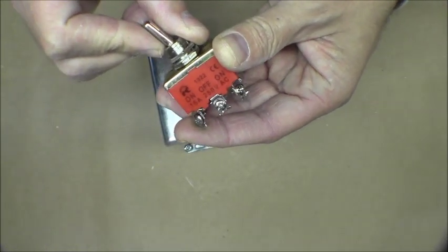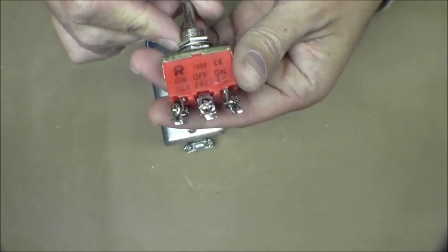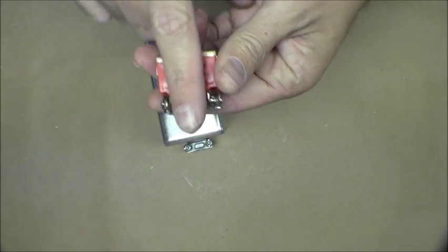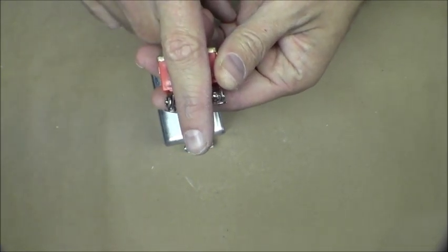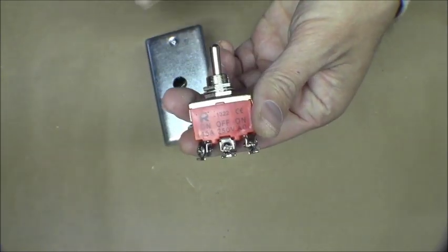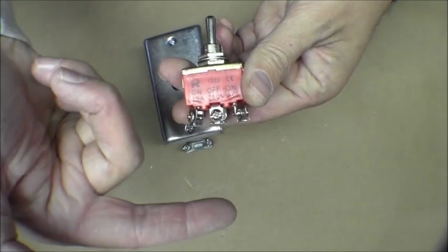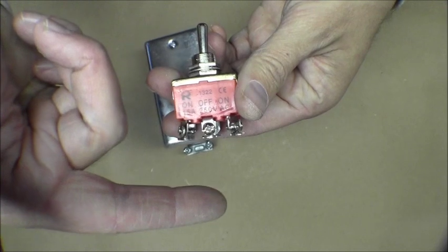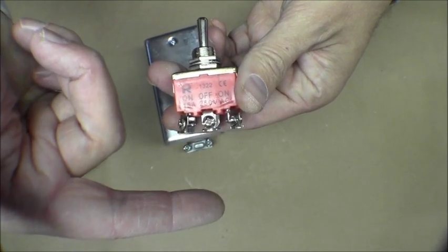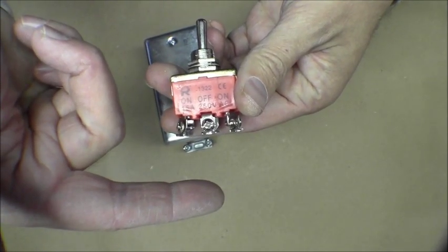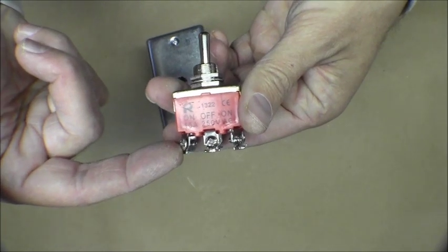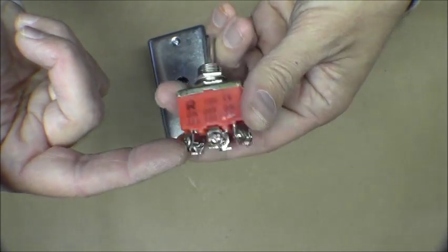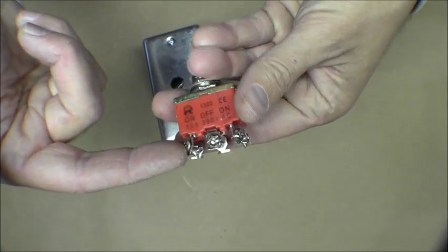It's real important you get a double pole double throw. What that means is that we've got a center pole which is our common, meaning it's always connected all the time. This is what's going out to what we're powering - say this is powering our gas furnace. So this is the power coming off, the leg coming off here is always connected to what we're powering.